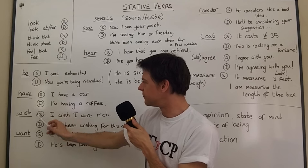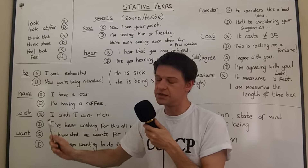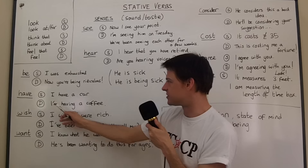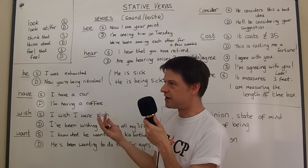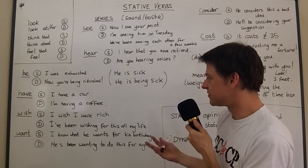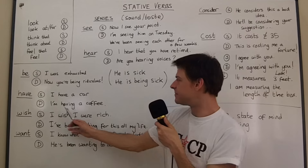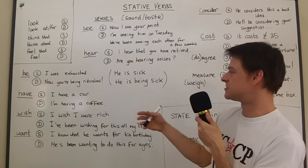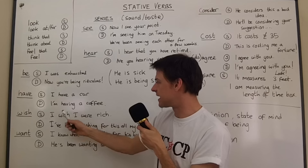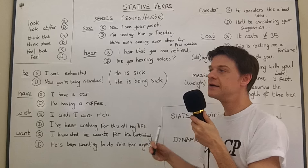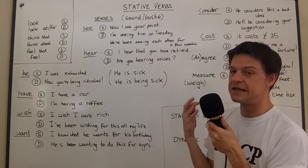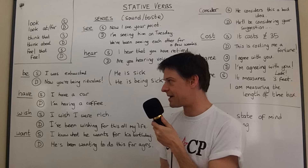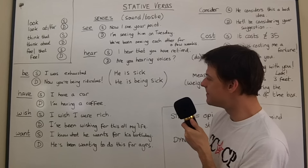'Have,' when it expresses possession, is always stative. 'I have a car,' 'I have brothers and sisters' — these are states of being. But if you're using 'have' to talk about an action like 'have a coffee' or 'have a shower,' these are very dynamic, so you can certainly say 'I'm having a coffee' or 'I'm having a shower.'